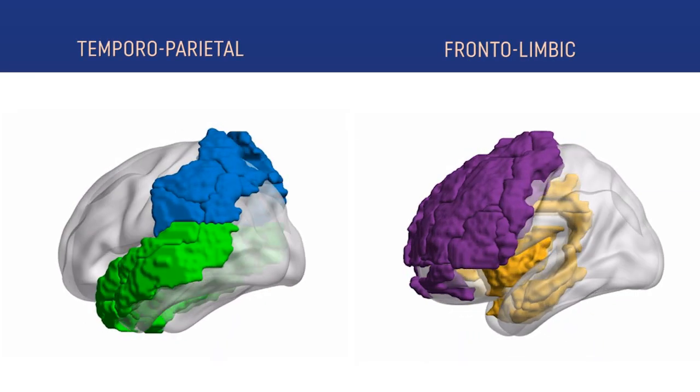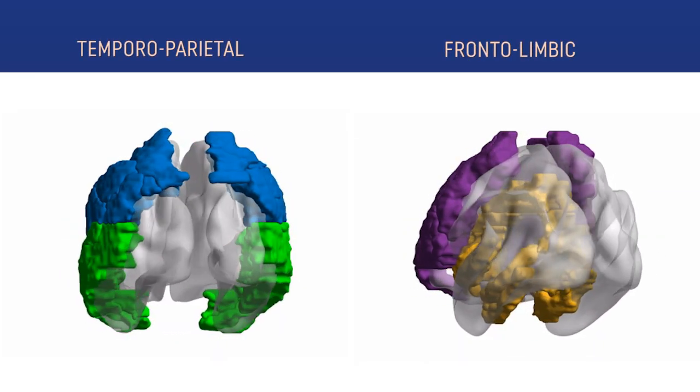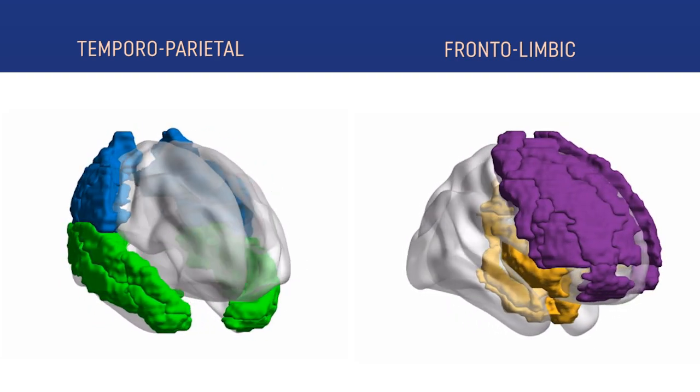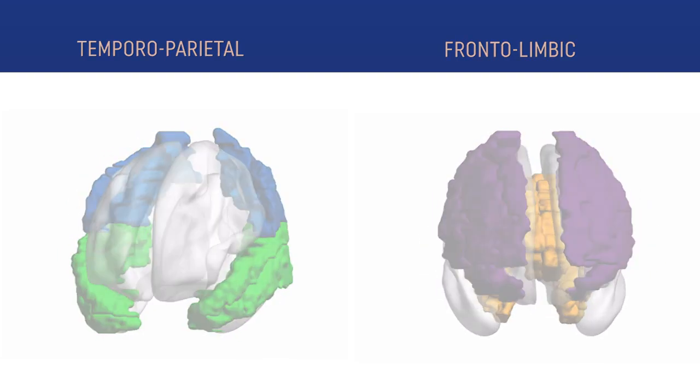Social reinforcement is a powerful facilitator of human learning. Think about how interacting with a person, for example a teacher, tells us about our performance and helps us adjust our behavior. Contextual interpersonal cues like facial emotional expressions engage arousal and reward-punishment mechanisms that promote learning. This socially reinforced learning critically depends on temporoparietal and secondarily on frontal limbic hubs, which are related to associative learning and social cognition.